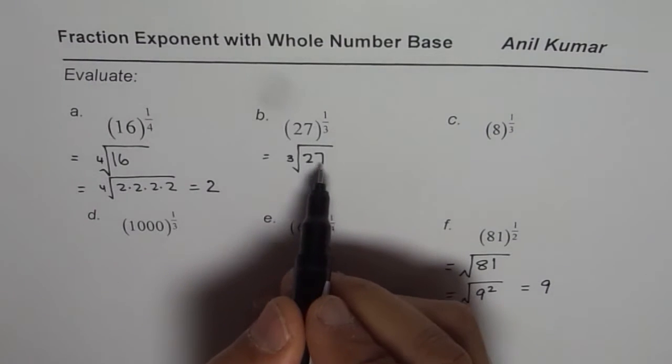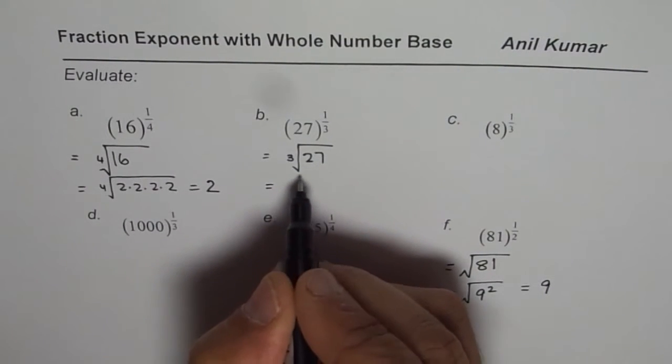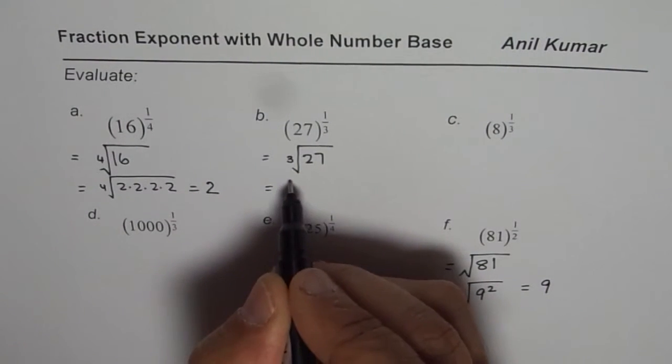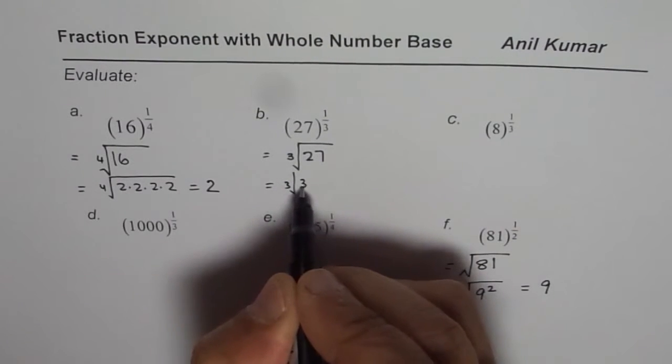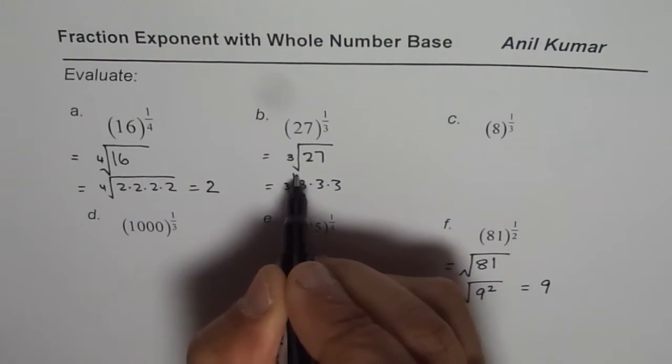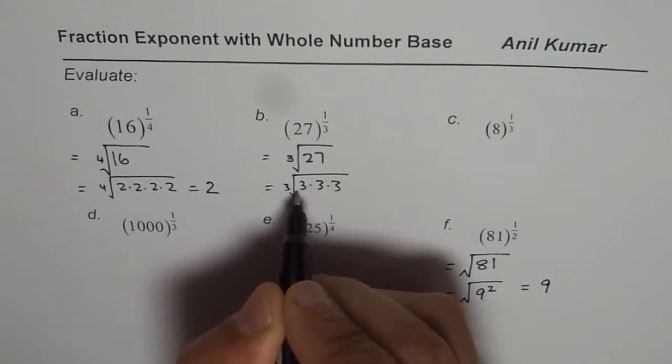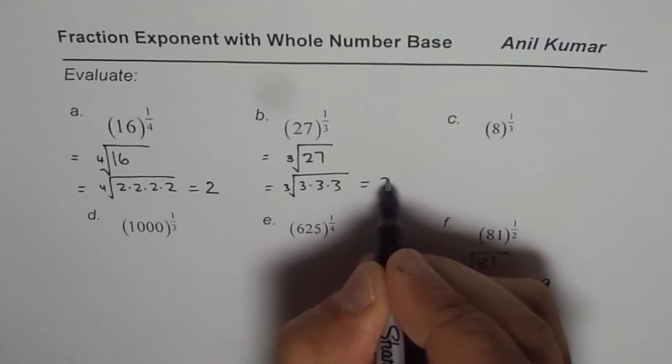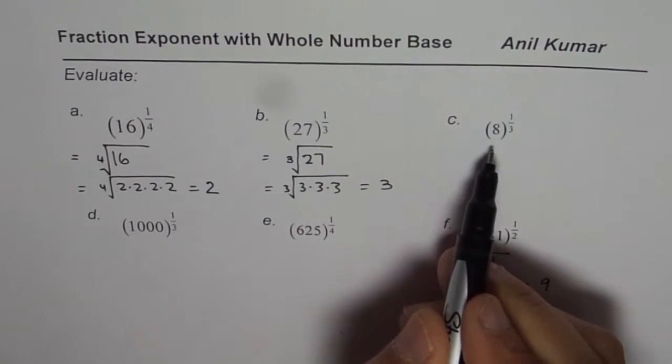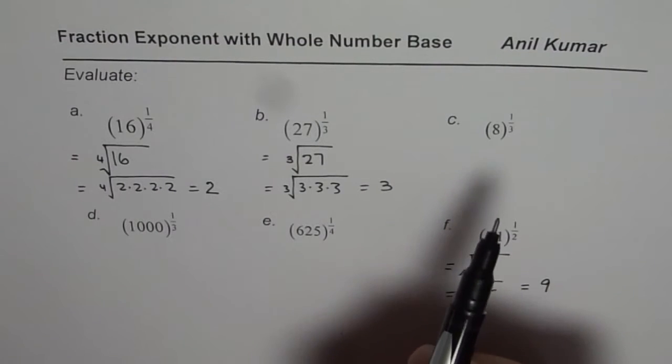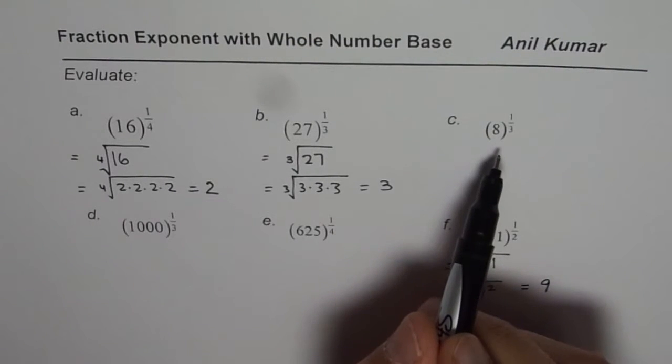Cube root of 27 is 3 since 3 times 3 times 3 is 27. So, the answer is 3 for us. So, that is for you to practice. The answer is 2. So, you need to show how you get that answer.